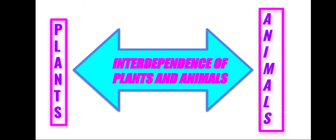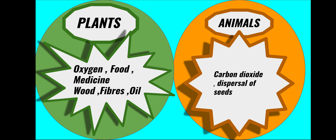We will understand this under the heading interdependence of plants and animals. Green plants are the main producers of food. Animals eat them as food. Oxygen gas released by plants is used by animals and humans for breathing. Plants not only provide us with food to eat and oxygen to breathe, they give us many other things also which are used by us.